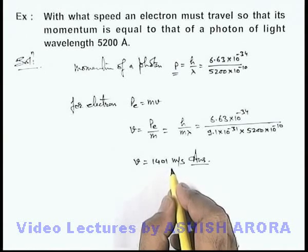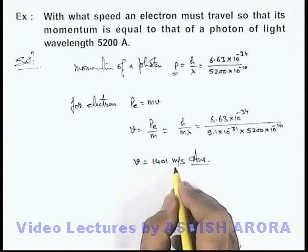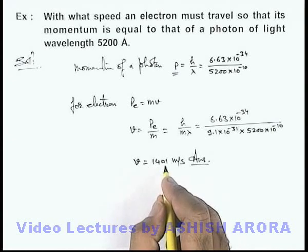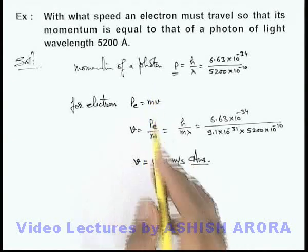When electron travels with the speed 1401 meters per second its momentum will be equal to that of the photon of wavelength 5200 angstrom.